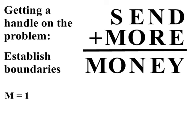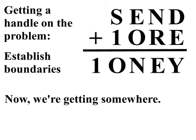Another useful technique when doing complicated problems is to make sure you get new information down on paper as soon as you come up with it. In this case, let's replace M with one in our problem. Now we're getting somewhere.